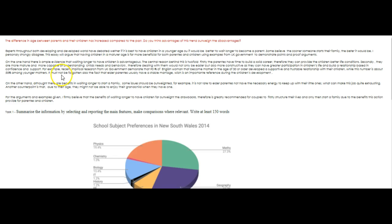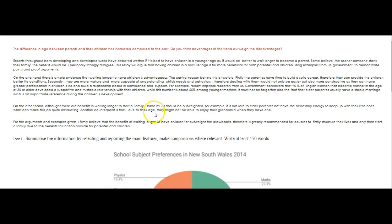On the other hand, although there are benefits to waiting longer to start a family, some issues should be considered. For example, it is not rare for elder parents not to have the necessary energy to keep up with their little ones, which can make this job exhausting. Another counterpoint is that, due to their age, they might not be able to enjoy their grandchildren when they have one. Well, that's a little short for a full paragraph. You really should have developed it more. Visually, look at this — you've got like four lines for this paragraph and one and a half lines for this one. However you develop the stronger one, you need to try to develop the other in a relatively equal way. You definitely needed to do more work here.